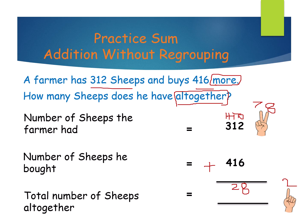Now in the hundreds place, the digits are 3 and 4. Keep 4 in your mind and open 3 fingers. 4 after: 5, 6 and 7. What is 3 plus 4? 7. The farmer has how many sheep in total? 728.